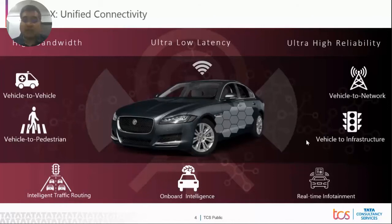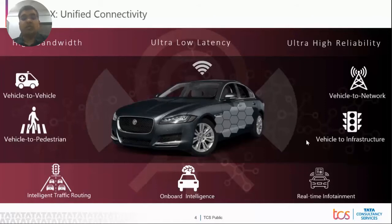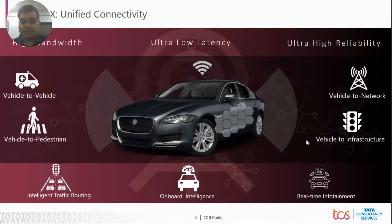One very interesting use case is intelligent traffic routing — if I can manage my traffic considering all vehicles are connected or autonomous, I should be able to route traffic in a way that minimizes traffic jams, reduces carbon footprint, and ensures emergency vehicles reach their destination in time. Emergency vehicles is one of the use cases I will showcase toward the end of this presentation.